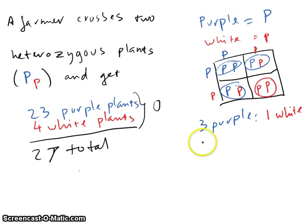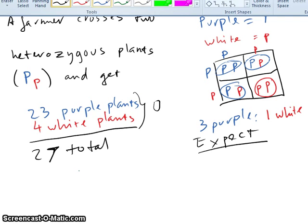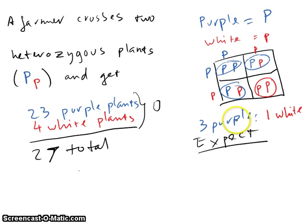So your expected value, and this is the important part. Your expected value, if this were to follow the Mendelian law, you have 27 total plants. That means that how many should you expect to be purple? Well, you should expect three-quarters of those to be purple. So your expected value for purple will be 27 multiplied by 3 divided by 4, which equals 20.25.